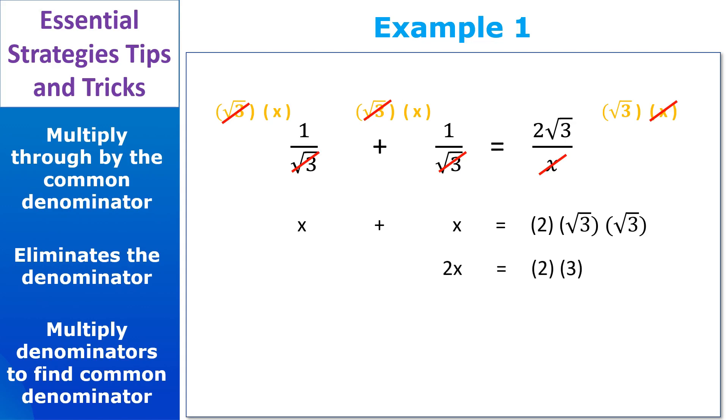So this is pretty simple to solve. We end up with 2x equals 2 times 3. Remember, root 3 times root 3 equals 3. So 2x equals 6. That means x equals 3. Very nice job.